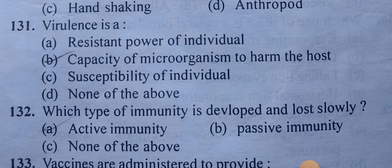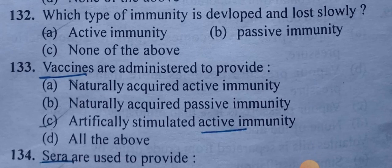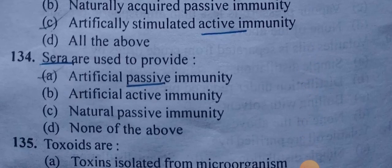Active immunity is the type of immunity that is developed and lost slowly. Vaccines are administered to provide artificially stimulated active immunity. Sera are used to provide artificial passive immunity.